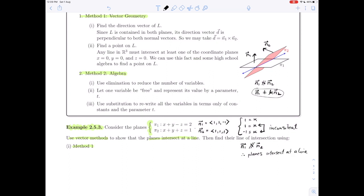That's the first part done. Now we're going to use method 1 to find the line of intersection. Method 1 says the first thing we're going to do is find a direction vector on L and then find a point on L, because that's all we need to give the equation of a line: a point on the line and a vector parallel to the line.